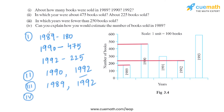The fourth part asks: how would you estimate the number of books sold in 1989? As we can see, in 1989 the value is very close to 200, so we estimated that around 180 books were sold in 1989.